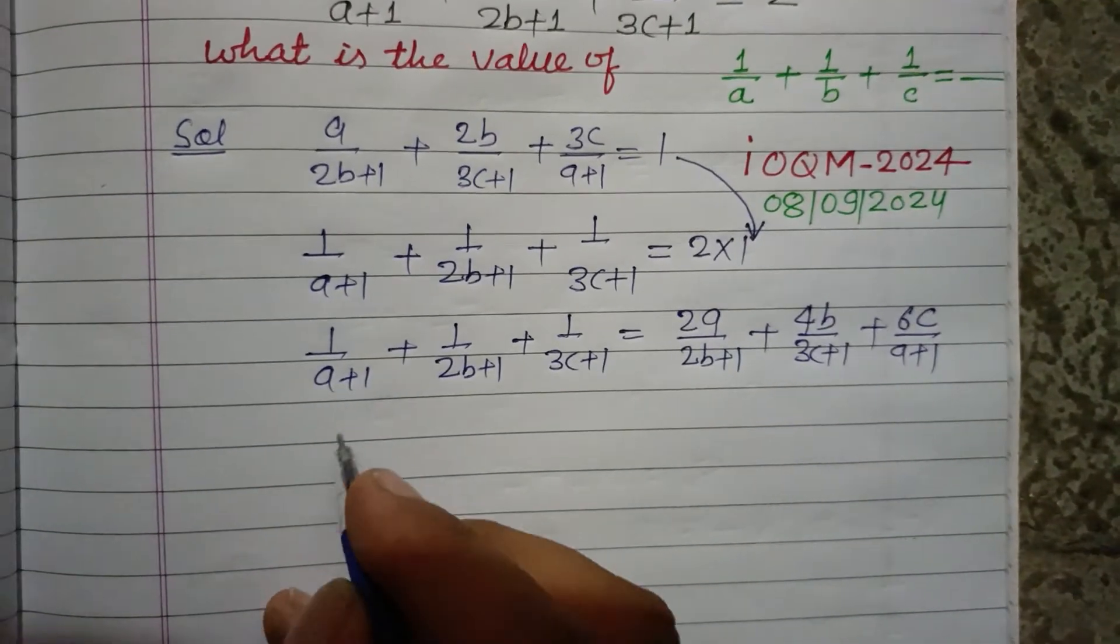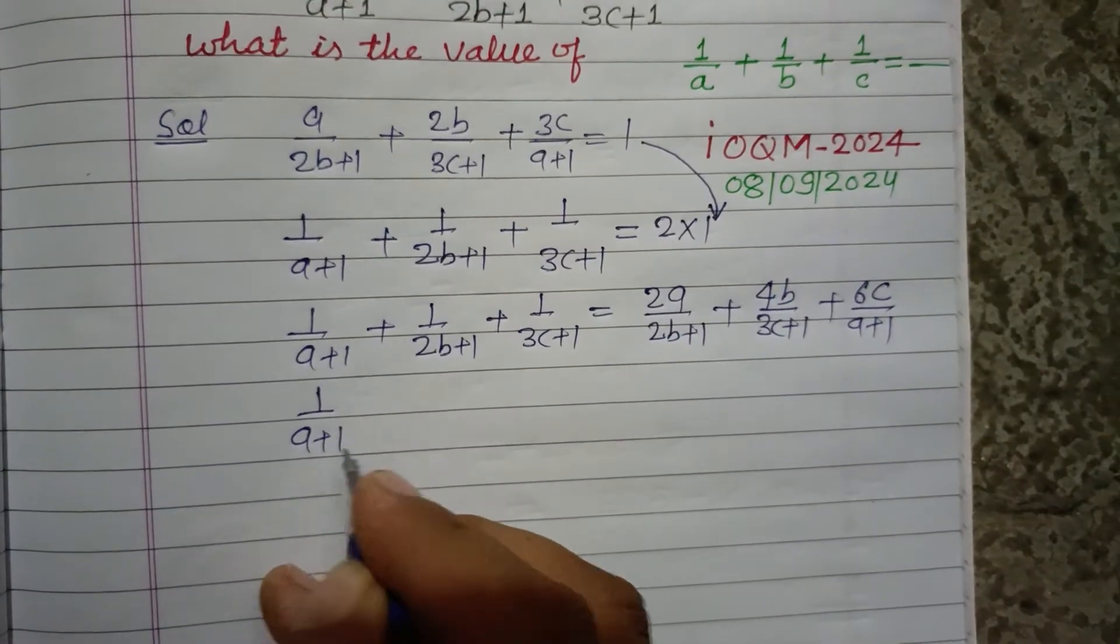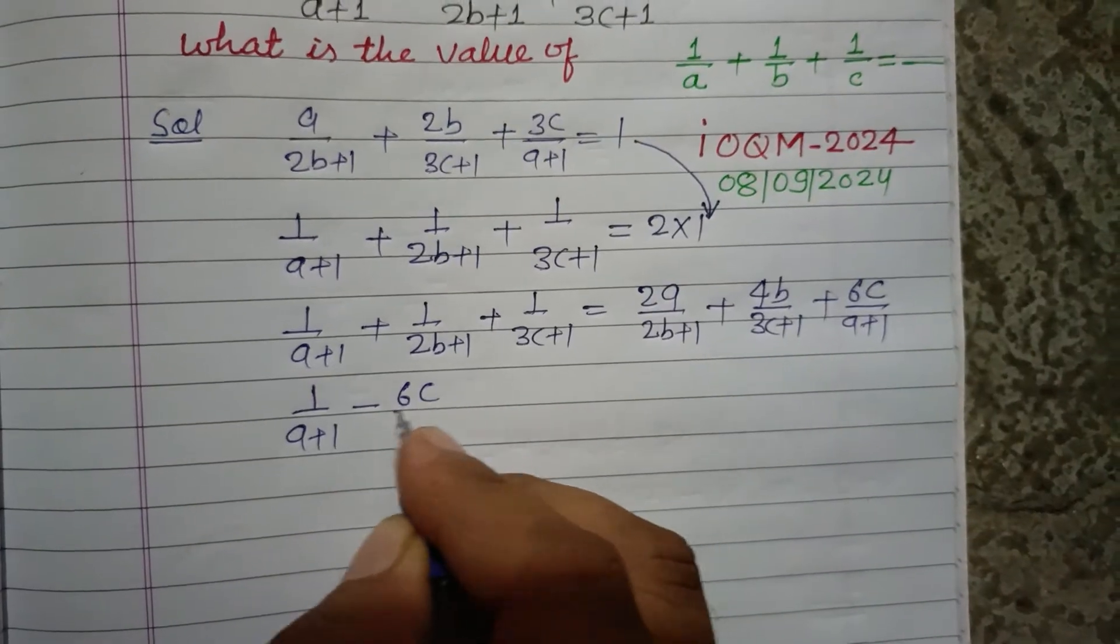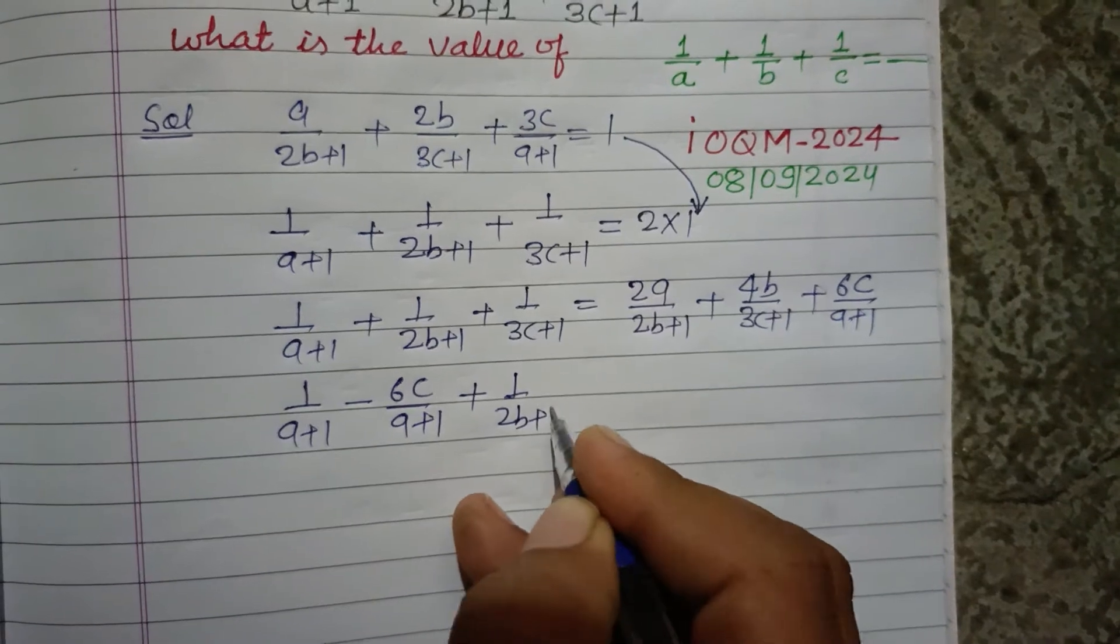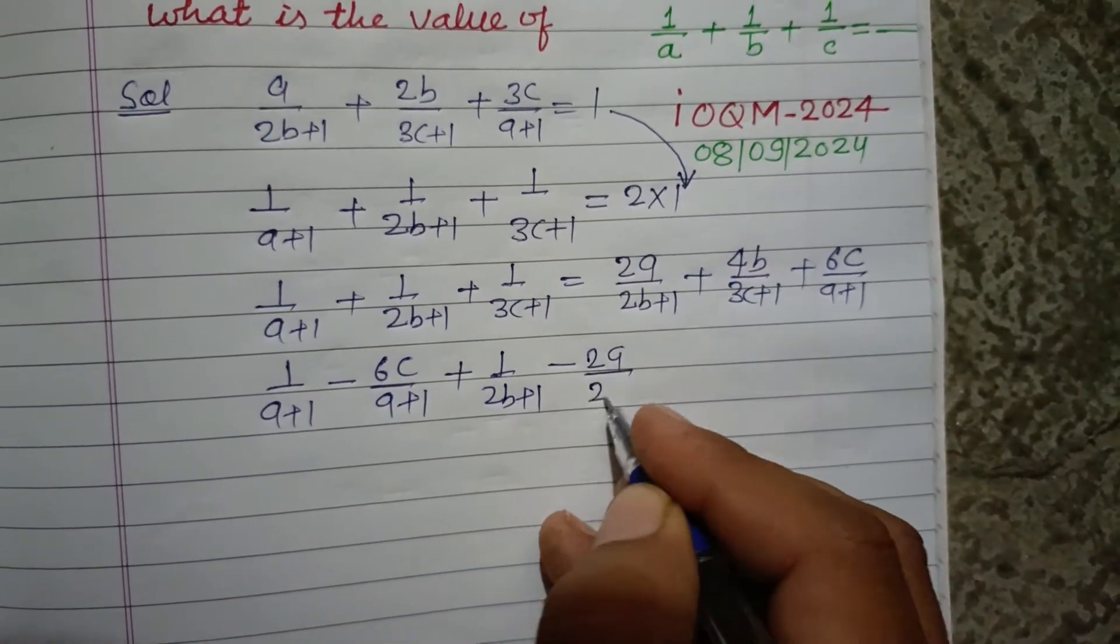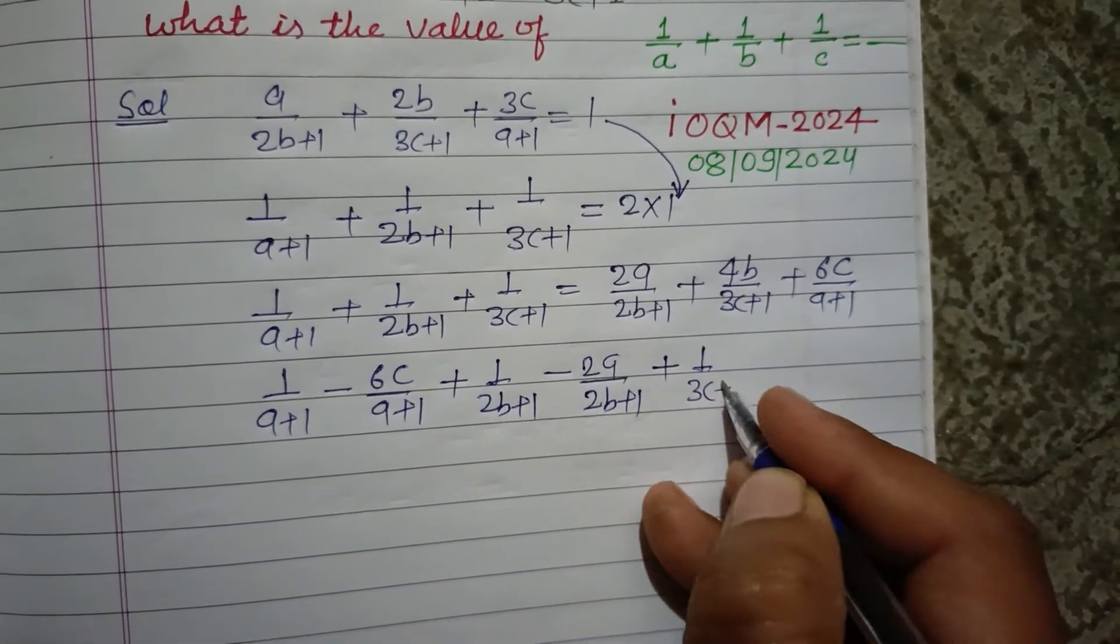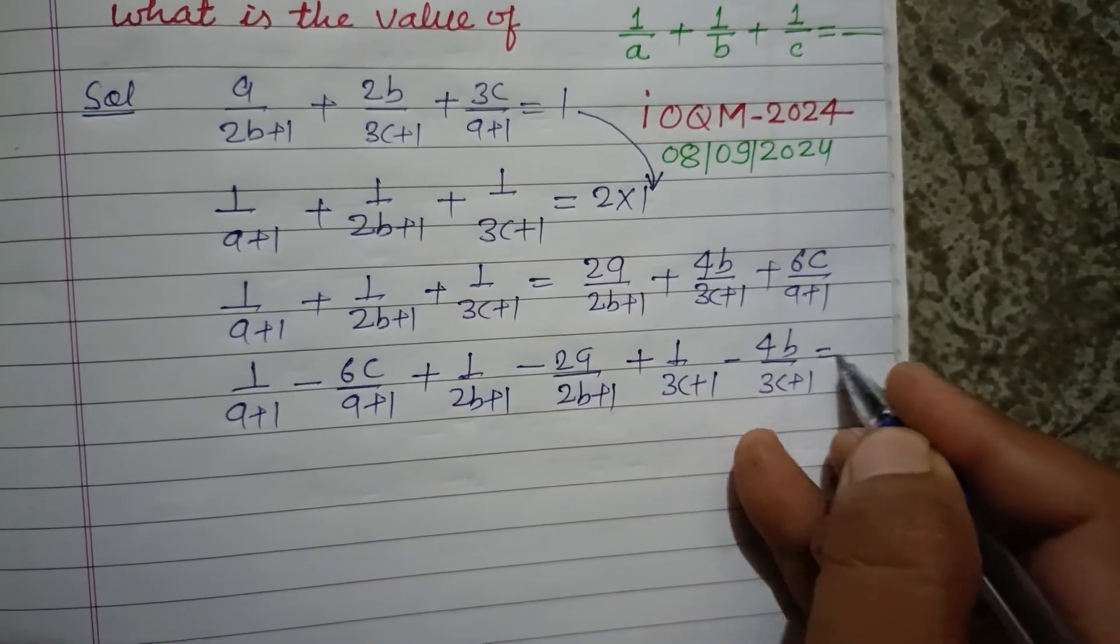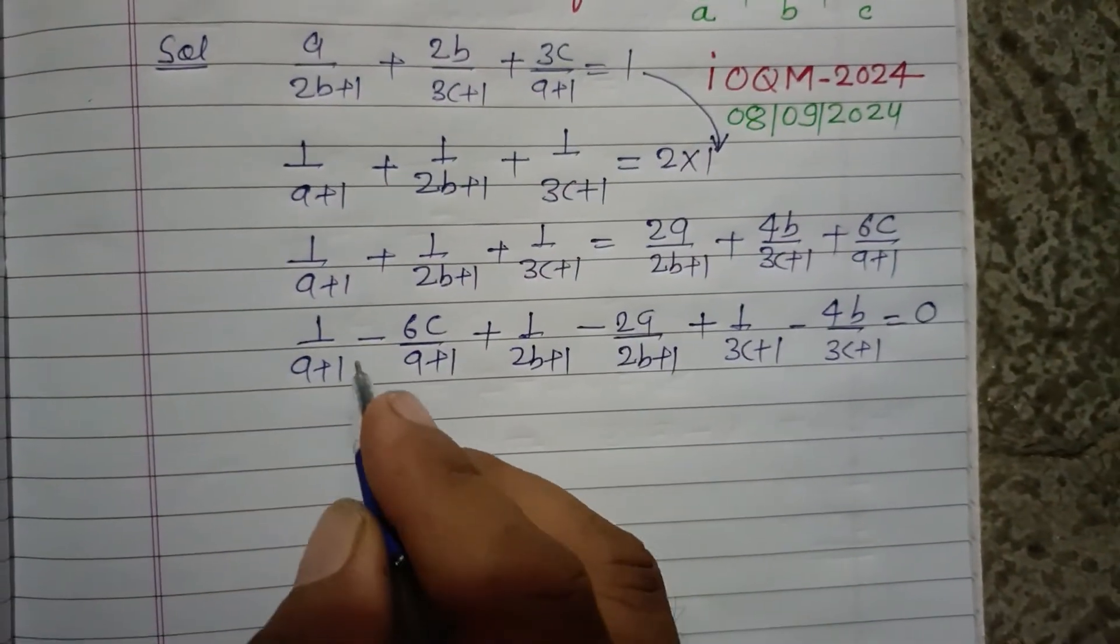So 1 upon a plus 1 minus 6c over a plus 1, plus 1 upon 2b plus 1 minus 2a upon 2b plus 1, plus 1 upon 3c plus 1 minus 4b upon 3c plus 1, and on the left side 0 remains.